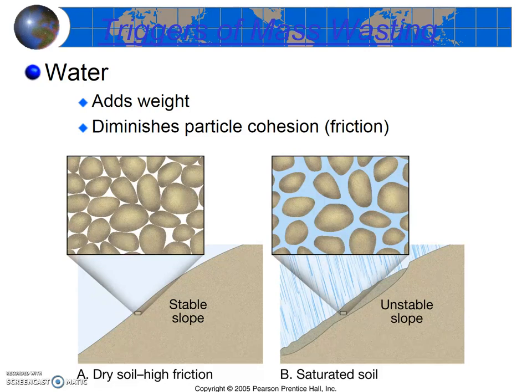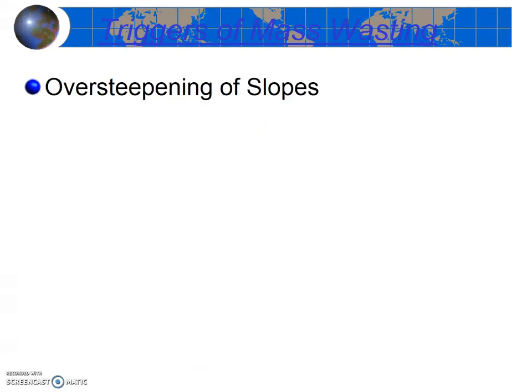Regions that experience heavy rains during part or all of the year will be more at risk. We just learned that every material has an angle of repose that, if exceeded, will result in a mass wasting event. Over-steepening can happen by natural means, such as undercutting by a stream or by wave action along a coast, or it can be human-caused, such as over-steepening the cut slopes or fill slopes during road building or other forms of development.